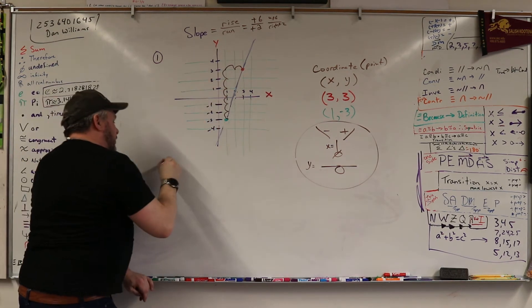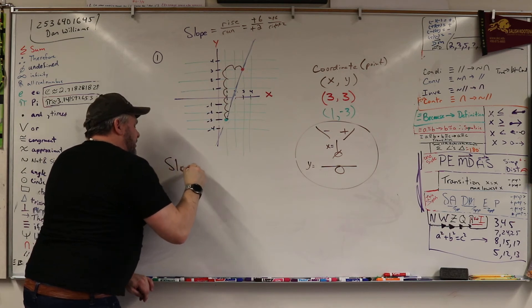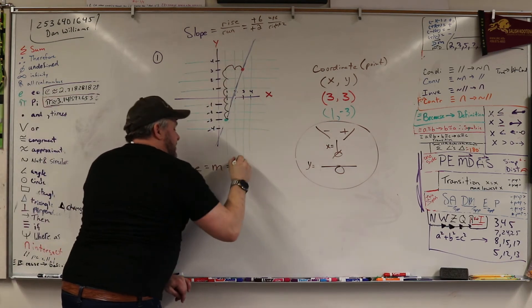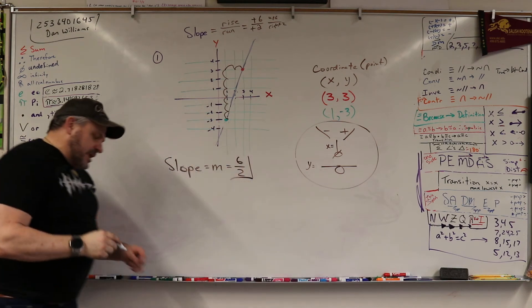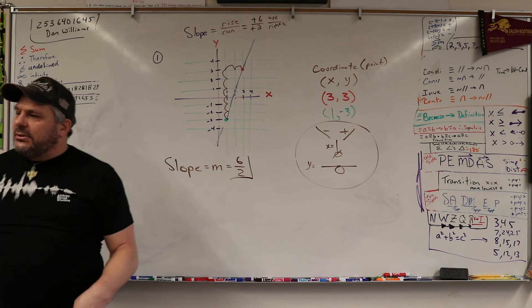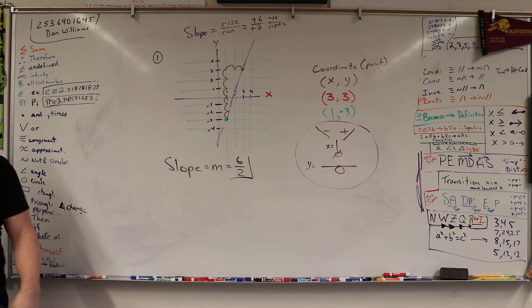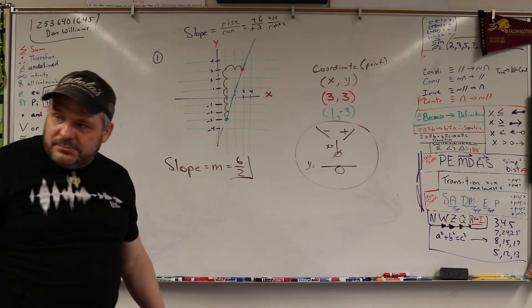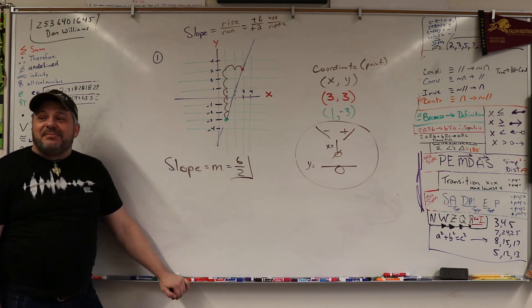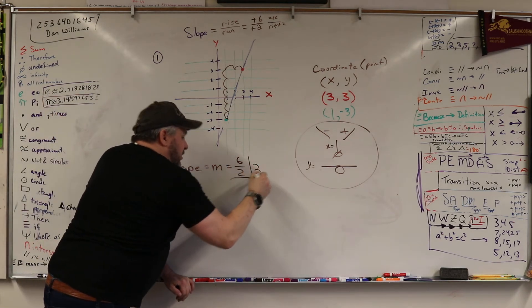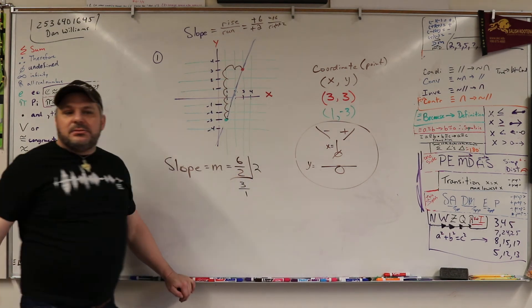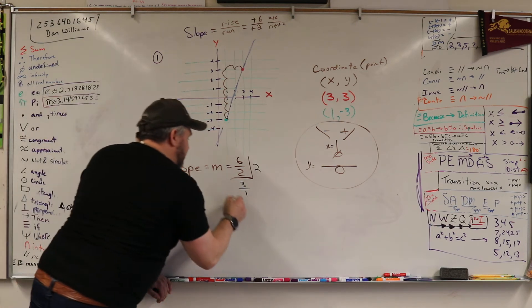Now, another thing we do for slope is we call it M. So, M is equal to what? M is equal to six over two. But, is there any number that goes into six and two? Any number you know of that goes into six and two? Summer? What goes into six and two? Three. Three. Three. Three goes into six three times. Two goes into six three times. And, two goes into two once. Right? And, so, we reduce the fraction.